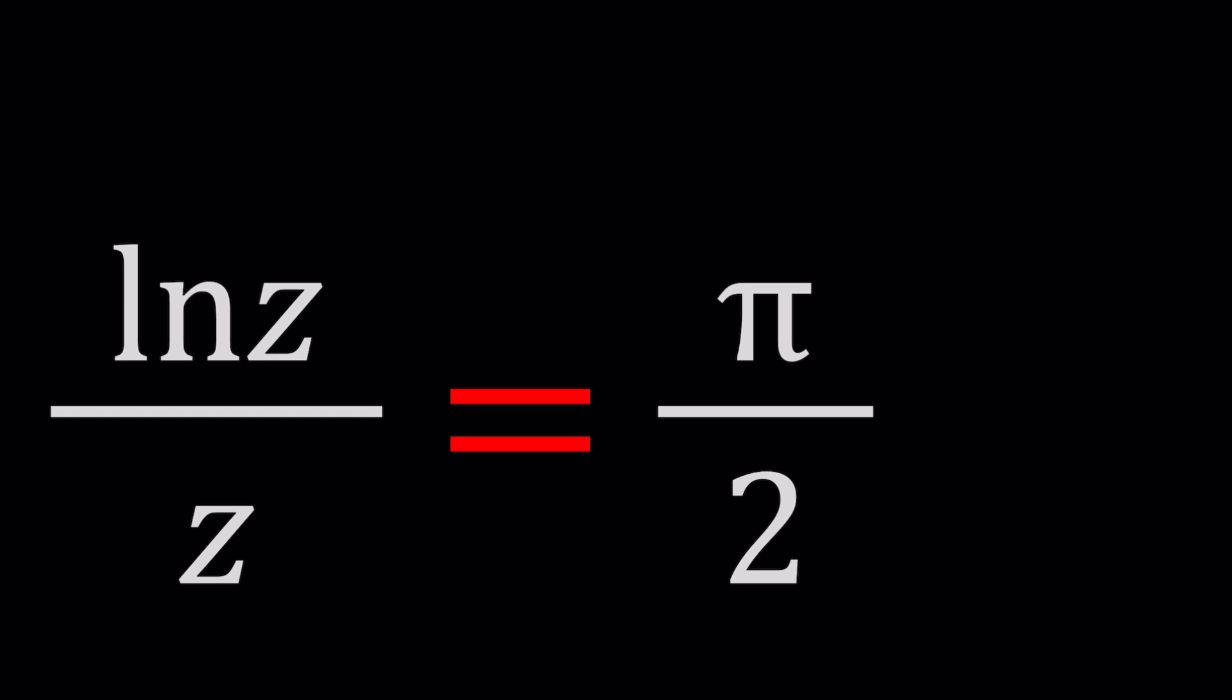I call this equation interesting because first of all it's a non-standard, maybe a transcendental equation because we have ln Z and Z that are very different kinds but we're talking about the ratio being equal to a constant. So we can't solve this problem by standard means or can we? There's a way to solve it.